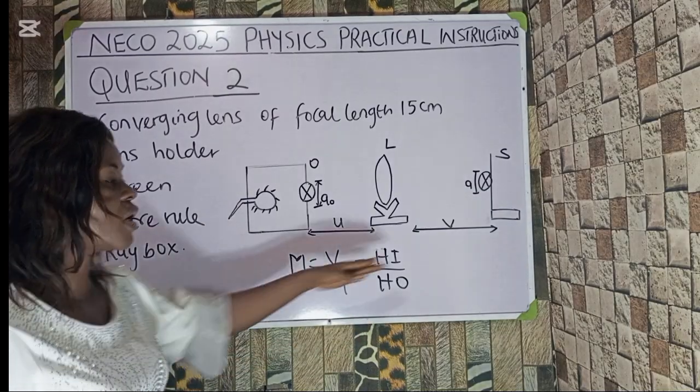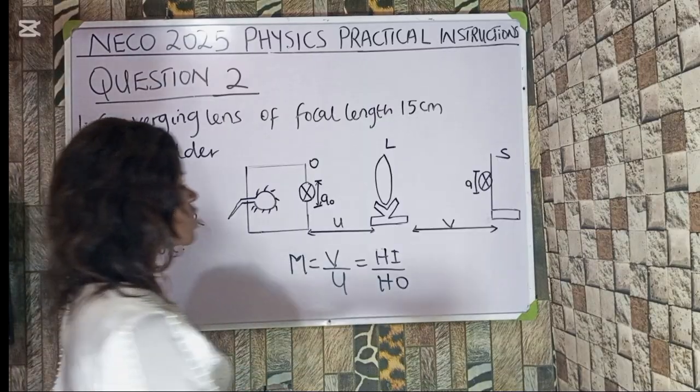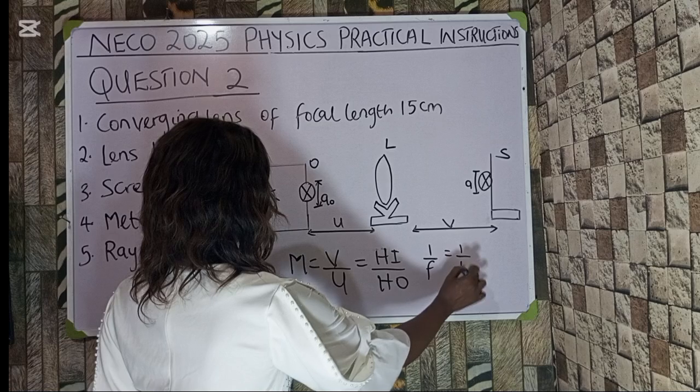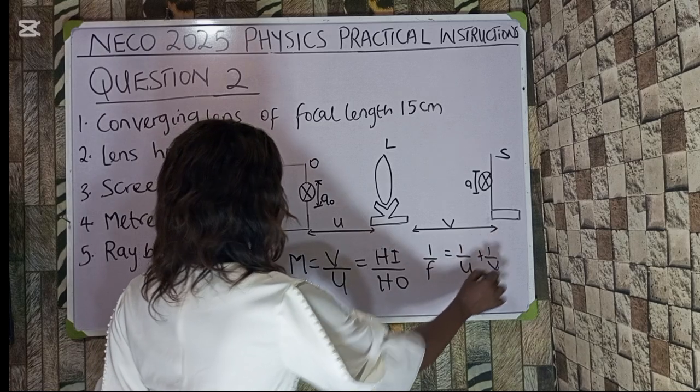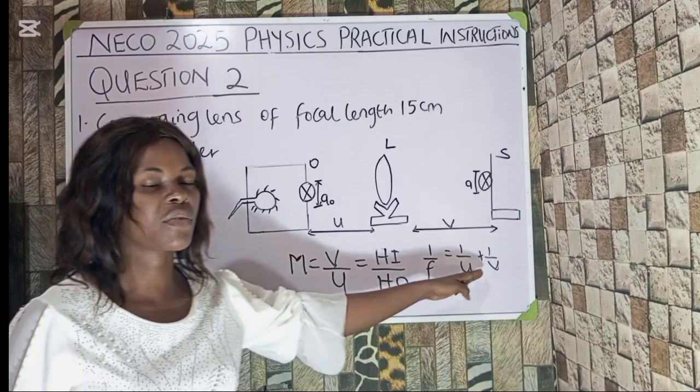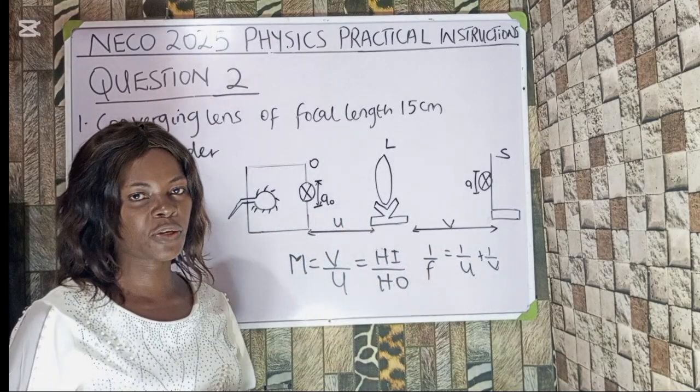You may also ask to plot a graph of V against U. That leads us to lens formula. This states that 1 over F is equal to 1 over U plus 1 over V. Now making them the subject, if you ask to plot a graph of V against U, we can make it the subject. So let's move to question 3.